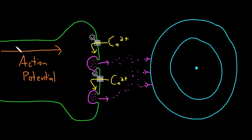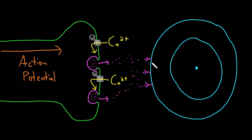A longer duration of a train of action potentials causes neurotransmitter release to occur over a longer period of time, so there is a longer duration of neurotransmitter present in the synaptic cleft. This is how the information in frequency and duration of action potentials is converted into the amount and duration of neurotransmitter in the synaptic cleft, which is then passed on to the target cell by neurotransmitter binding to receptors — the number of receptors bound and the duration of binding reflects the amount and duration of neurotransmitter in the cleft.